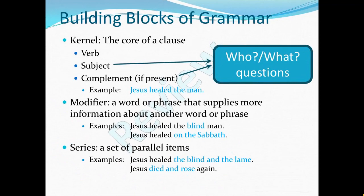You have kernels, which are the core of their clause. They consist of, minimally, a verb with its subject, also a complement if one is present. The subject and the complement answer the who or what questions with respect to the verb. Ask who or what before the verb to find the subject; ask who or what after the verb to find the complement. A modifier is a word or phrase that supplies more information about another word or phrase.